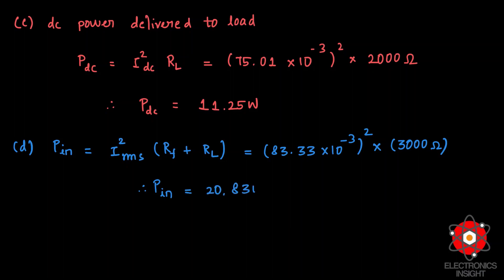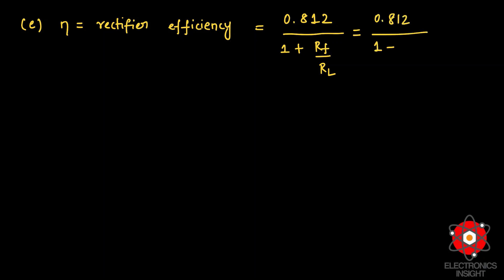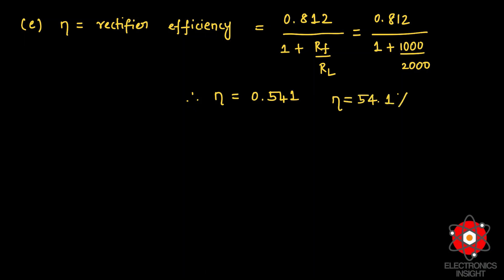The fifth parameter is the rectifier efficiency. The formula for a full wave rectifier is η equals 0.812 divided by (1 + R_f/R_L). Substituting R_f as 1000 ohms and R_L as 2000 ohms gives 1 + 1000/2000, which results in η equal to 0.541, or 54.1% in percentage.